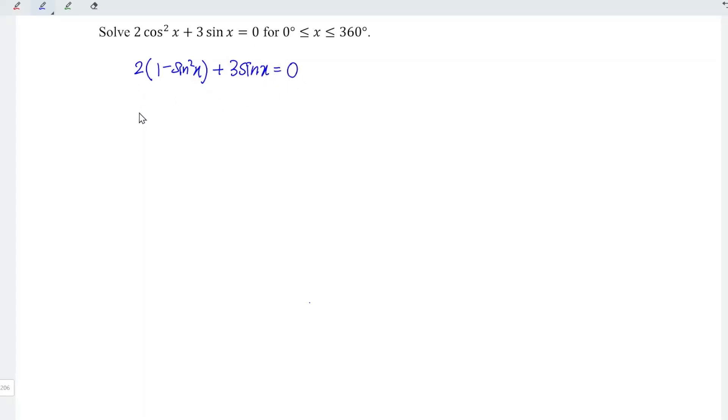Let's expand the first term. We have 2 minus 2 times sine squared x plus 3 sine x is equal to 0.